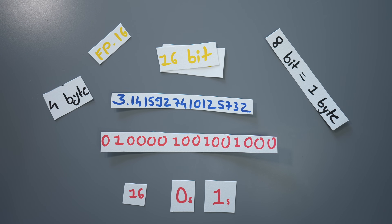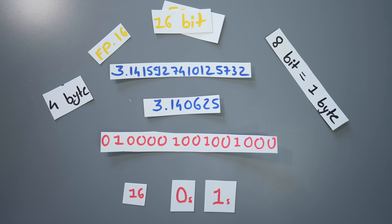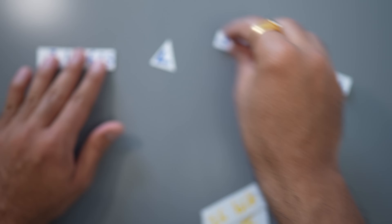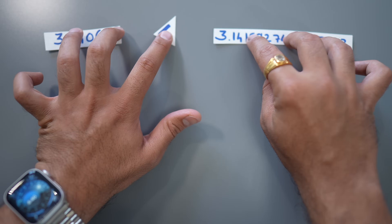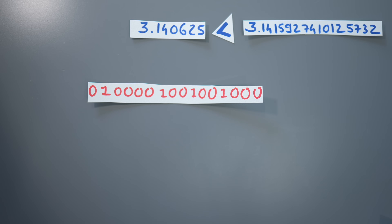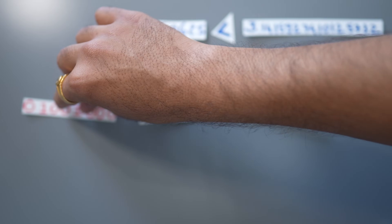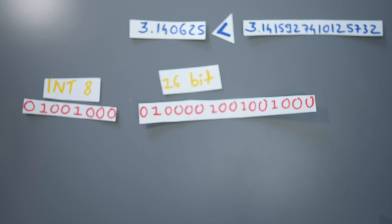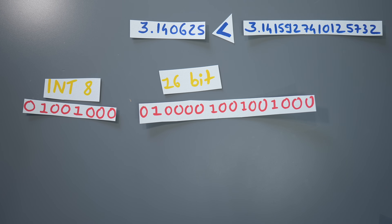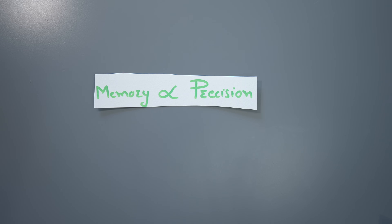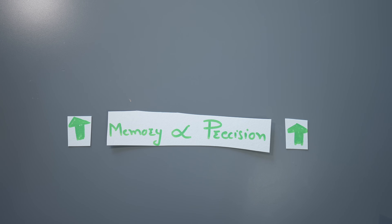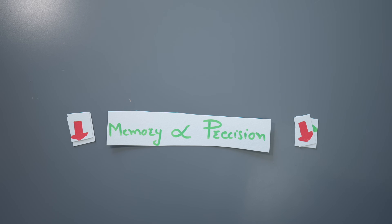Because we require half as much memory to store a number in fp16, they're also called half precision. But the number does not exactly equal what it was previously — the 16-bit number is a little bit less than what we had in 32 bits. You can go even further: instead of 16 bits, you can represent the number with an 8-bit integer. Now you only need 8 ones and zeros, but the number itself actually gets reduced down to just 3. So there is a trade-off — very precise numbers require more memory, while less precise numbers save memory but lose precision.